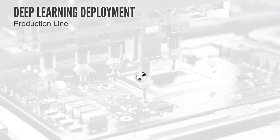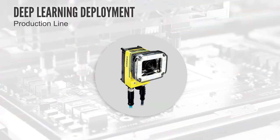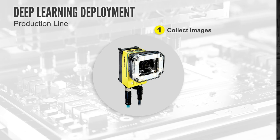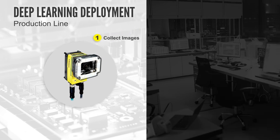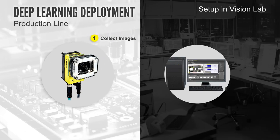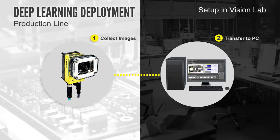In a typical deep learning application there is a very clear separation between setup and production. For the setup, the customer mounts a camera — in this case a D900 — on the production line to collect images of the objects to be inspected. Once a representative set of images has been recorded, these images need to be transferred to a computer running our training software.